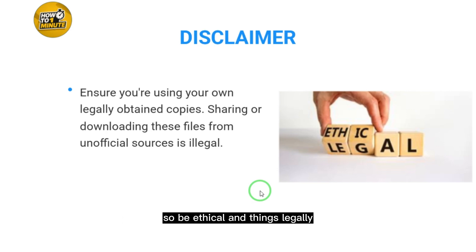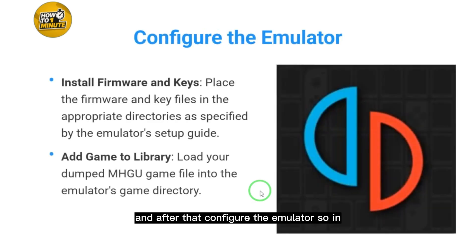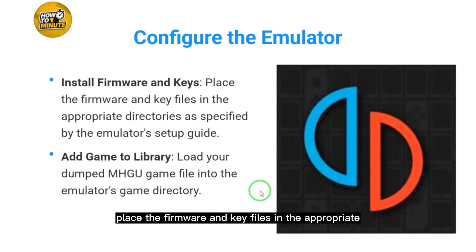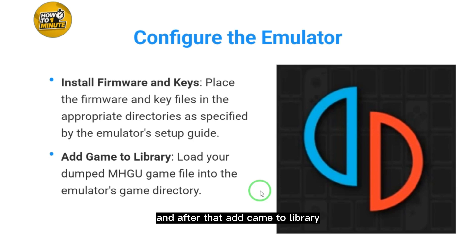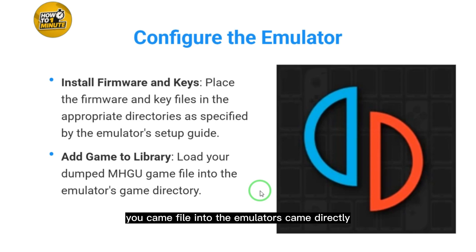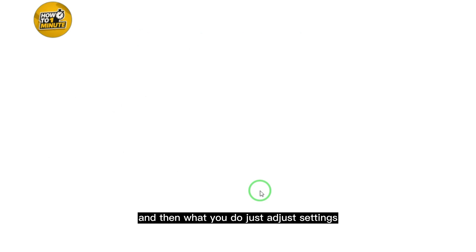After that, configure the emulator. Install firmware and keys by placing the firmware and key files in the appropriate directories as specified by the emulator setup guide. Then add the game to the library by loading your dumped MHGU game file into the emulator's game directory.